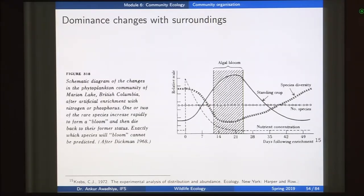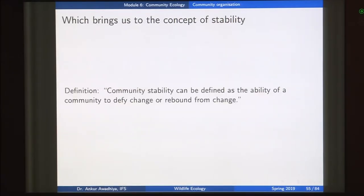How is any community able to bring itself back to normal? It is able to do so because of the concept of community stability. Community stability is defined as the ability of a community to defy change or to rebound from change.